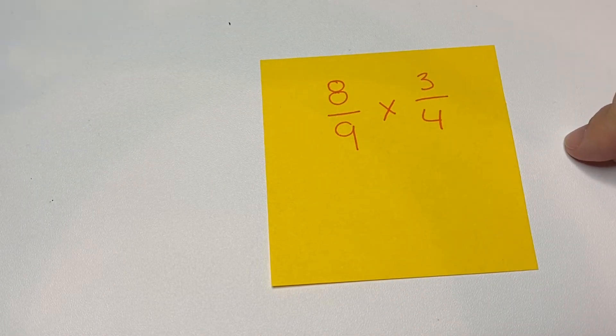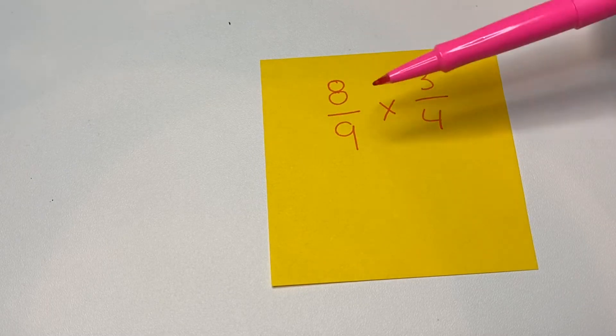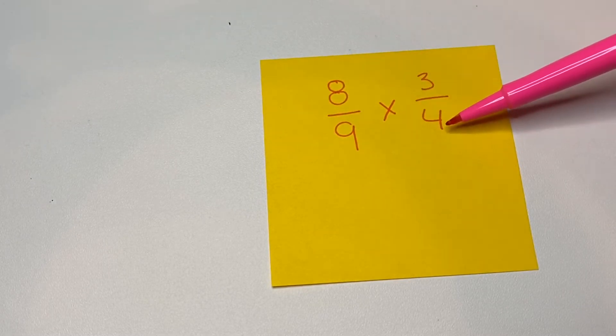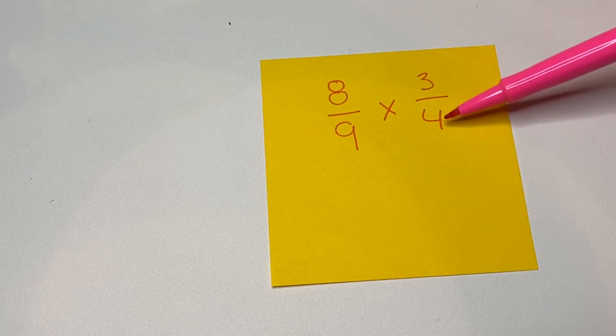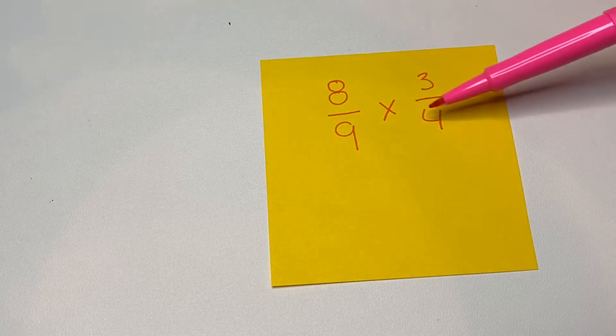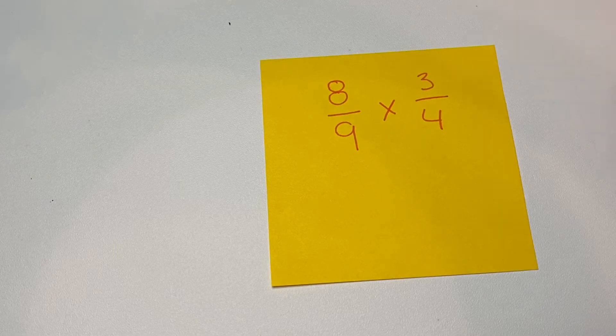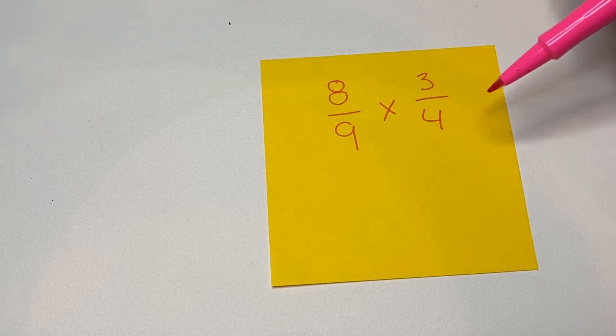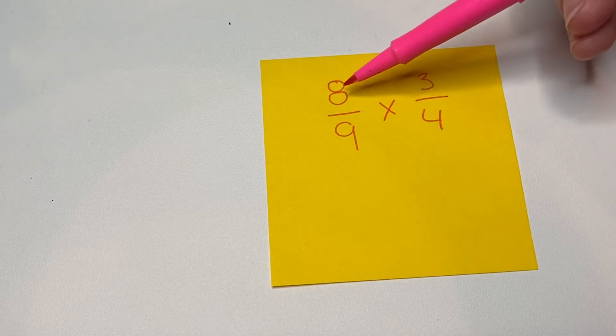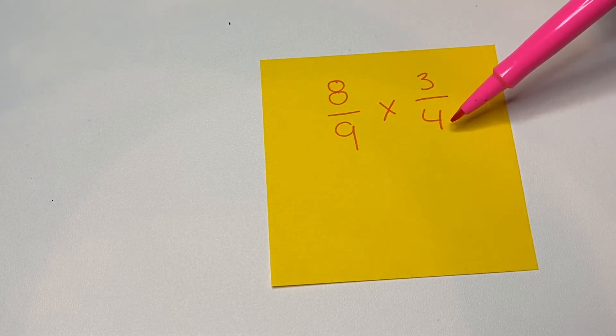So when you are canceling, you can use one numerator and one denominator to see if they cancel. It can also be these two, but we're going to talk about when it's a cross. We're going to call it cross-cancelling. And so what you're going to do is you're going to look for this numerator and this denominator and see if they have a shared factor.